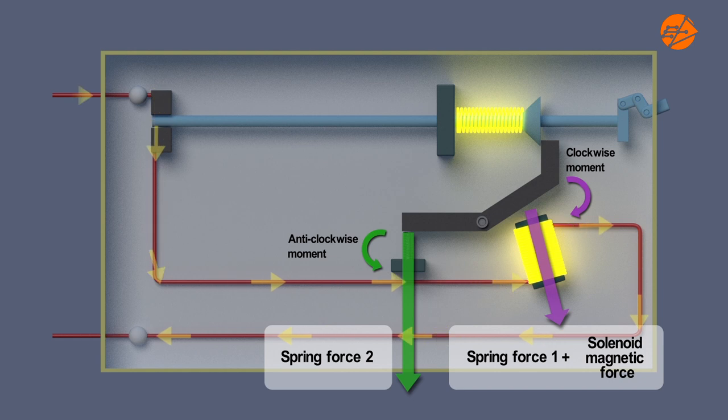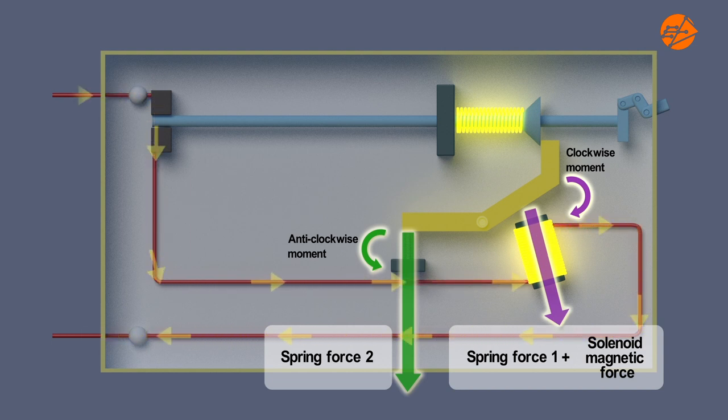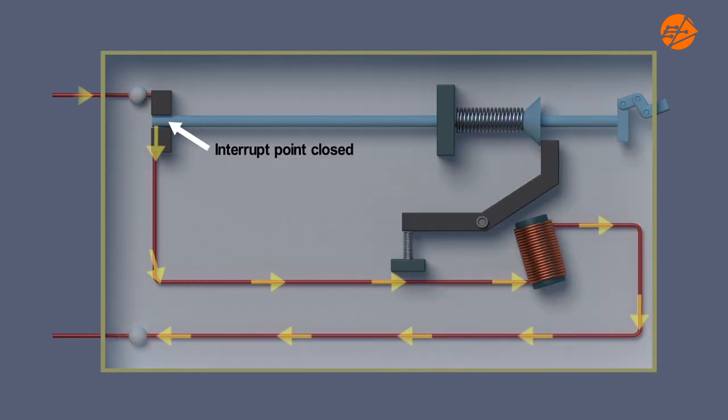Spring force 1 and the solenoid magnetic force is not strong enough to create a clockwise movement to overcome the anti-clockwise movement due to spring force 2 acting on the latch about the same pivot. The interrupt point remains closed and current flows normally through the circuit.